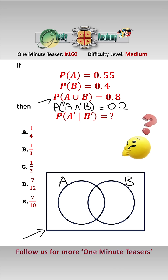Now using our formula, probability of A or B equals probability of A plus probability of B minus probability of A and B. Sticking in our figures, we have 0.8 equals 0.55 plus 0.4 minus the probability of A and B.